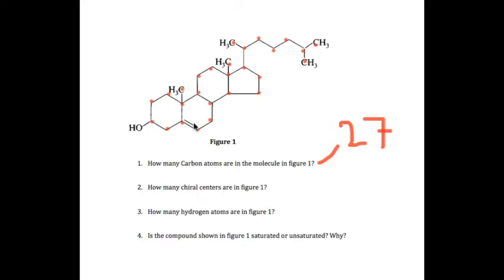So I'll start from here, we've got one here, two, three, four, five, six, seven, eight, nine, seven. So we have eight chiral centers.